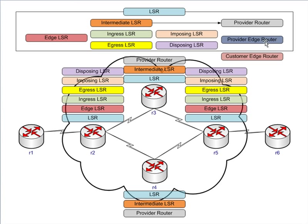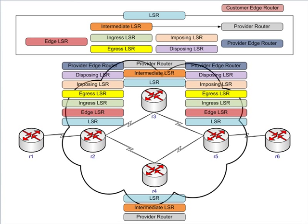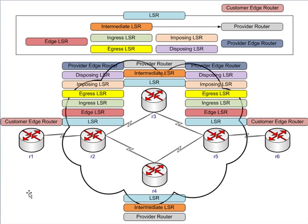Provider edge routers are the routers that will peer with the customer edge routers, and they generally peer using BGP. You can see we're really stacking up the labels here — I actually had to move the customer edge router definition to the top of the screen because we've got a pile of definitions. The customer edge router is your customer router that peers with the provider — that's going to be R1 and R6 in our case.